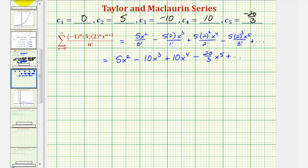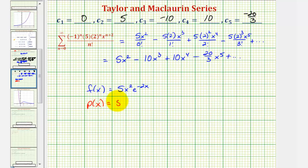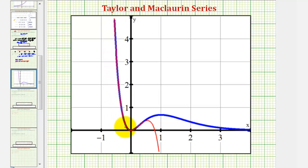Before we go, let's compare the graph of f(x) = 5x²·e^(-2x) with the polynomial formed by the first four terms of the Maclaurin series — the Maclaurin polynomial p(x) = 5x² minus 10x³ plus 10x⁴ minus (20/3)x⁵. Since the Maclaurin series is centered at x = 0, the blue function is the original and the red function is the Maclaurin polynomial. Notice that around x = 0, the Maclaurin polynomial is a good representation of the original function.